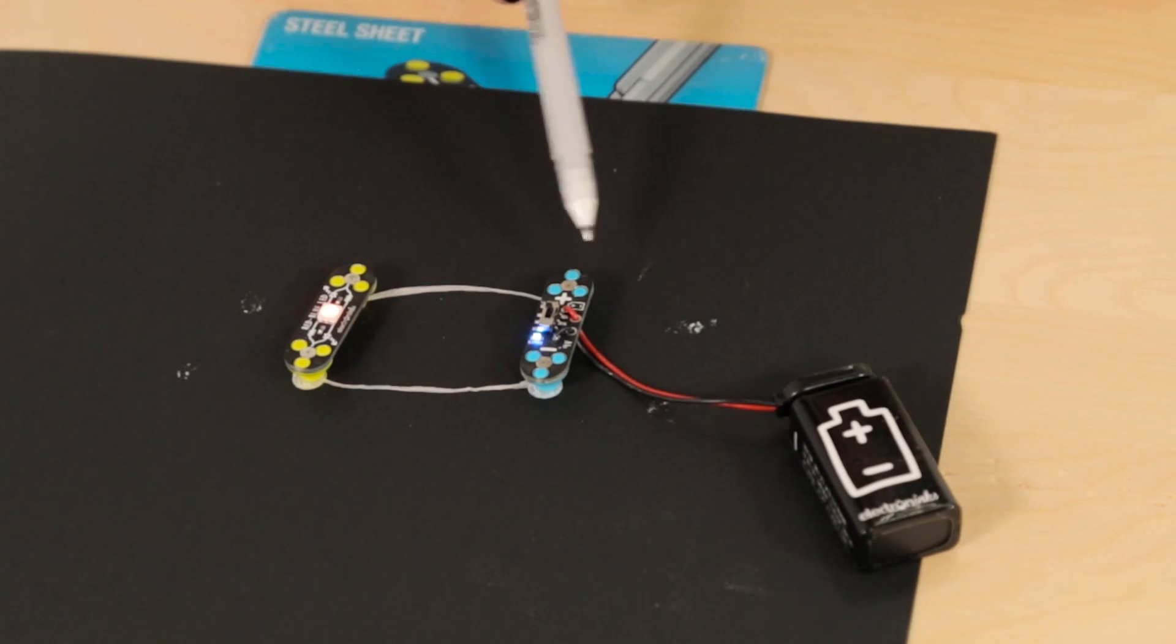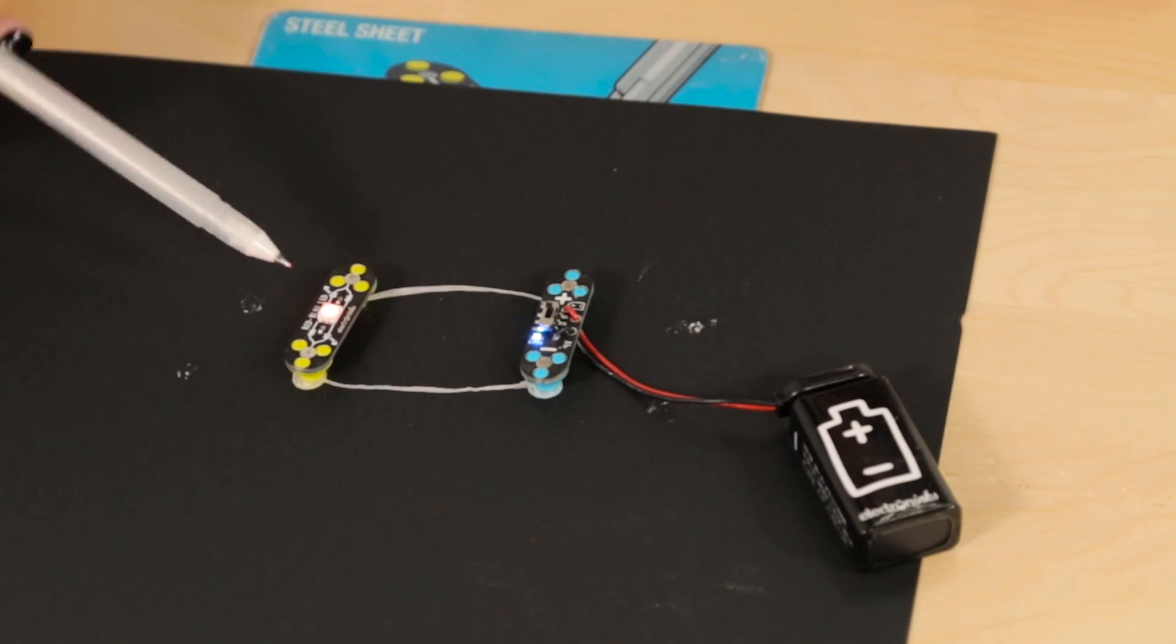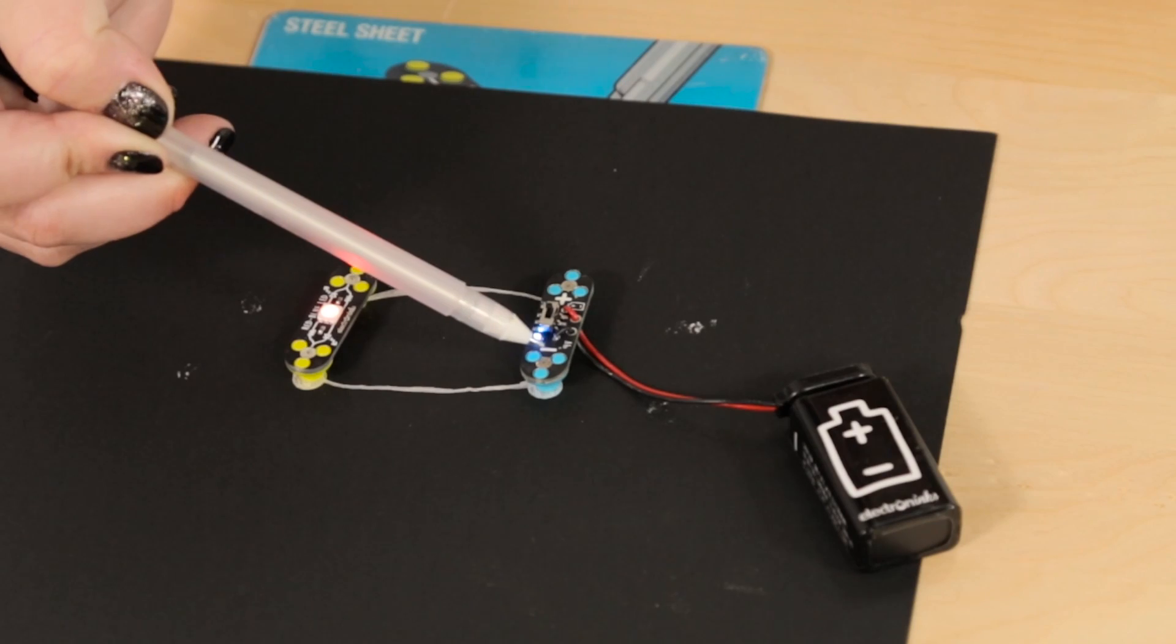So the power is coming from the battery, going out the plus, traveling along the line that I drew, through the LED, illuminating it, and then back into the negative, the ground side of the battery.